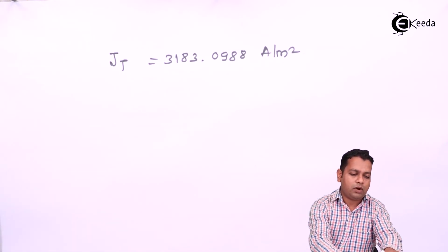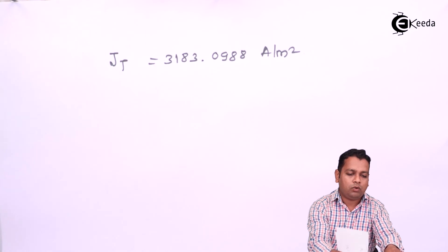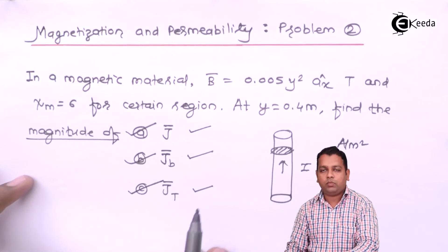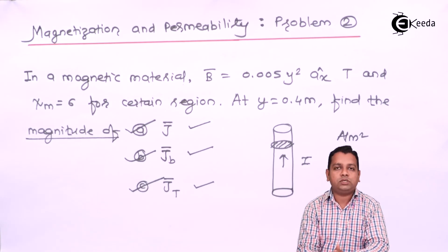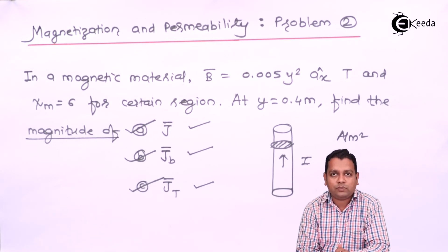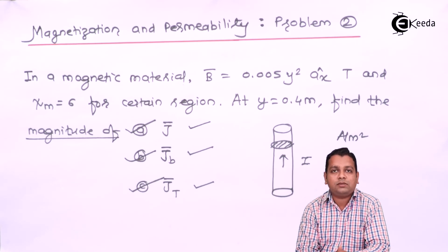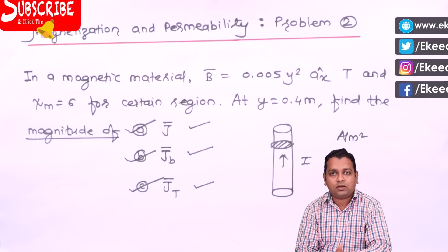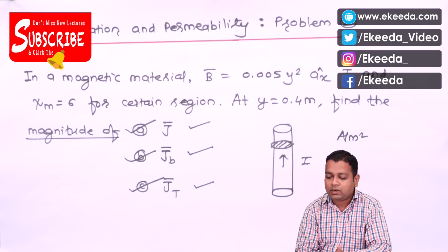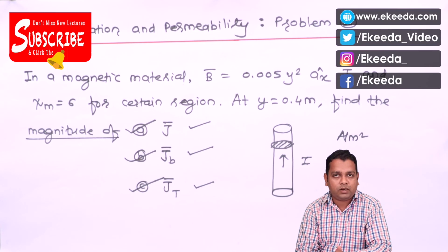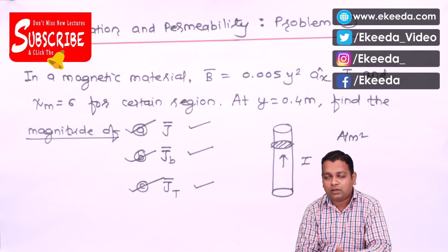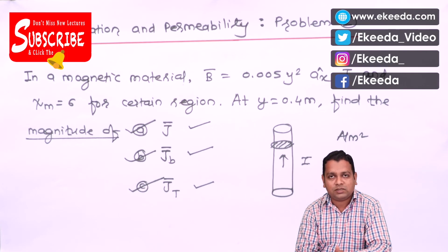We are covered with all three parts A, B, and C, based on magnetization and permeability. I hope you have understood the calculation of three types of current density when provided magnetic flux density and magnetic susceptibility. In the next video, we are going to take the last and third problem based on magnetization and permeability. For more information on Electromagnetic Field Theory, you can subscribe to the Ekeda channel. Thank you.